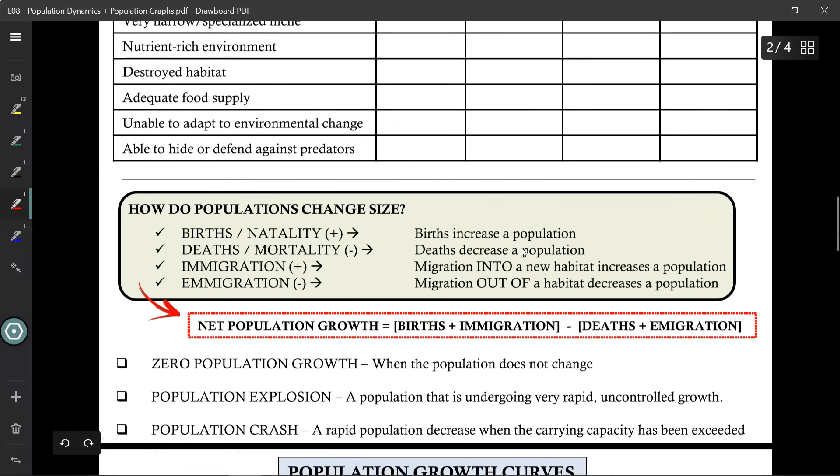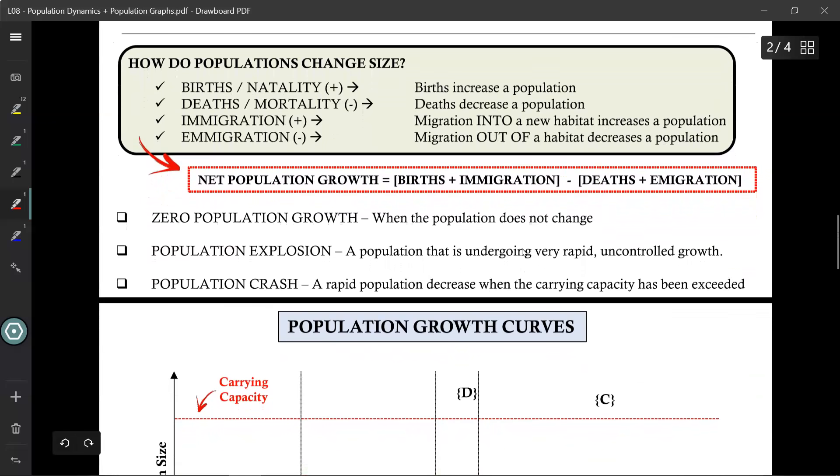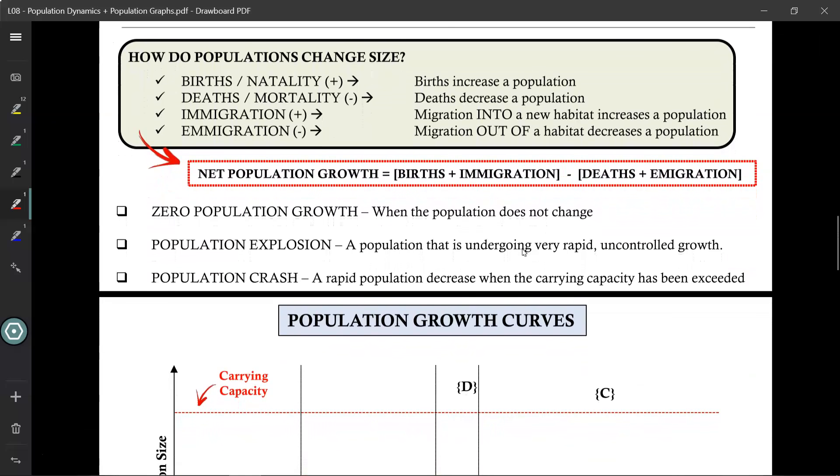Okay, on to our next topic. How do populations change size? So, populations can change size through births, also known as natality, so that's a fancy word for that. So, when an organism is born into a population, it increases the population. And, of course, deaths, known as mortality, reduces a population.